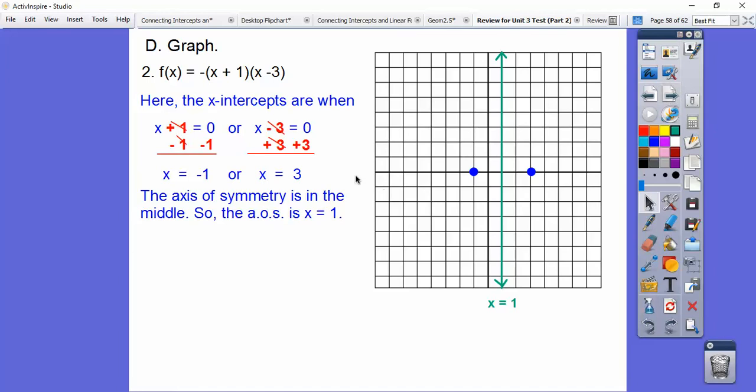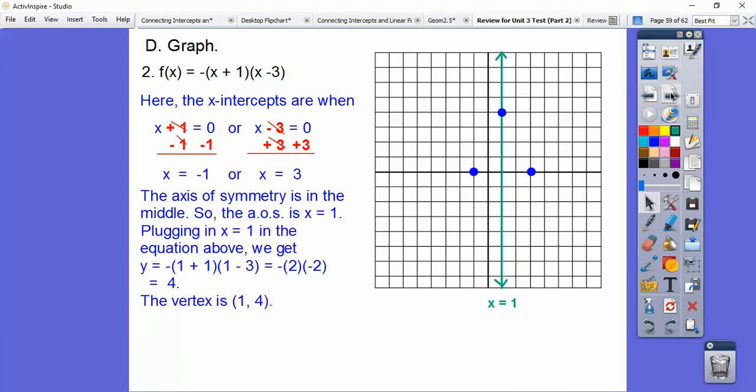So we know it's 1, so 1 comma what? Where is it up here? So we plug in 1 right here, 1 plus 1, and then 1 minus 3 right there. So 1 plus 1 is 2. 1 minus 3 is negative 2. Don't forget, we got a negative out here, so that all comes out to 4. So the vertex is up there at 1 comma 4.